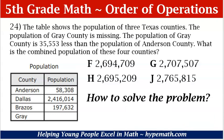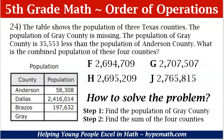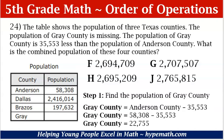How to solve the problem? Solving this problem will be a two-step process. Number one, we have to find the population of Gray County. Number two, we need to find the sum of the four counties. So let's start with step one — find the population of Gray County. Based on the information, we know that Gray County is 35,553 less than the population of Anderson County, so we are going to set up our equation.